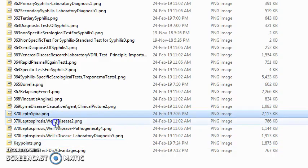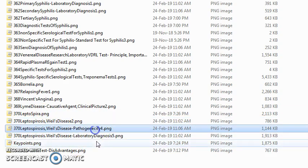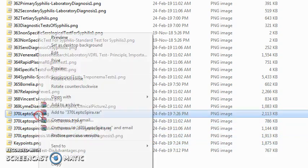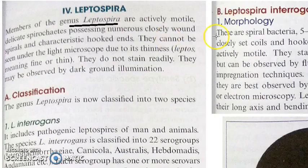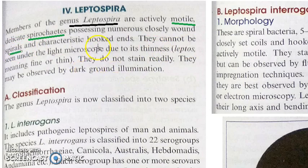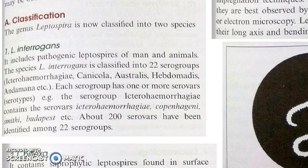Leptospirosis is also called Weil's disease. The main focus here is pathogenicity and lab diagnosis. Leptospira are spirochetes — they are motile and spiral in shape, which is why they are called spirochetes. They have hooked ends, as shown in the morphology diagram.